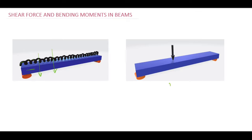Similarly, in the second figure you can see a beam acted upon by a point load. In both cases, the load is acting in the transverse direction, that is perpendicular to the axis.